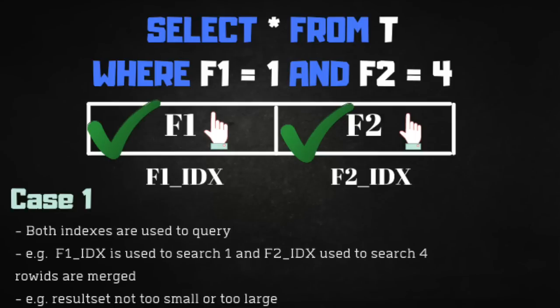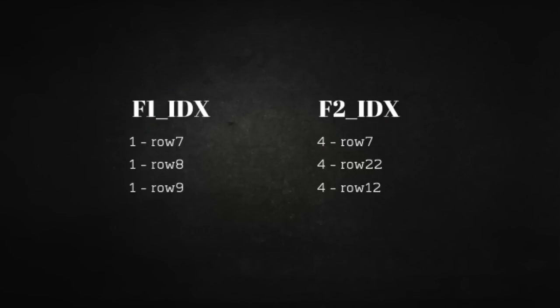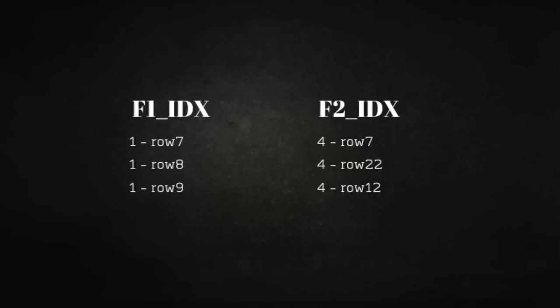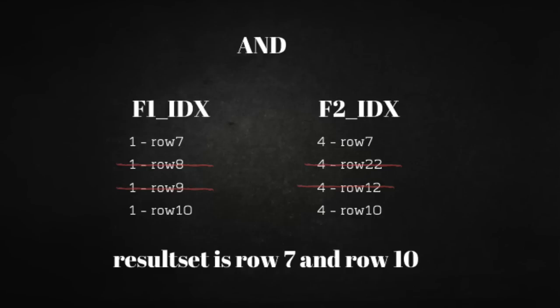Case number one is when the database optimizer decides to use both indexes. It queries f1_idx looking for the value 1, finding all the row IDs that match — tuples in Postgres, row IDs in Oracle and SQL Server — and collects them. Then it does the same search with value 4 on f2_idx, collecting a different set of row IDs. For an AND condition it does an intersection; for an OR condition it does a union, merging the results.